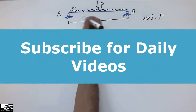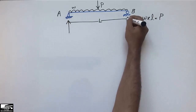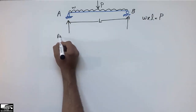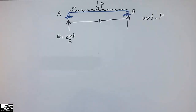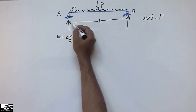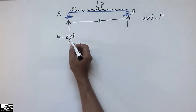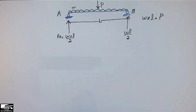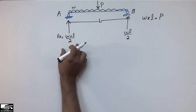To find the reactions, one reaction RA is provided at support A and one RB at support B. RA equals W×L divided by 2, because the total load is shared equally between the two supports. So RA = WL/2 and RB = WL/2, while the total load is WL.